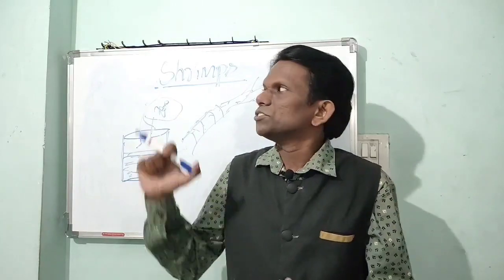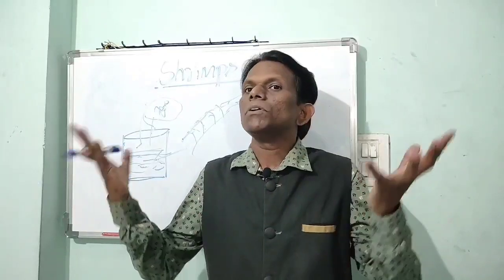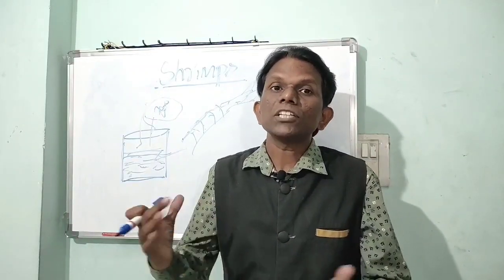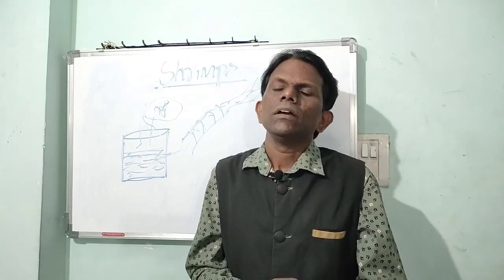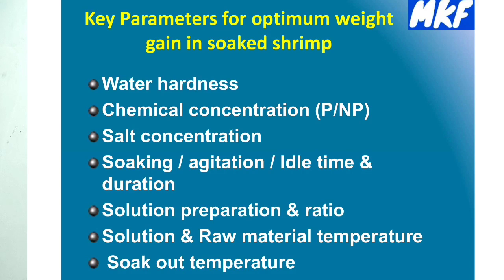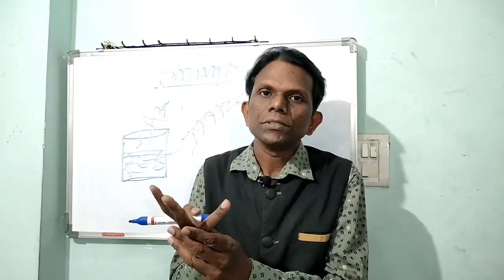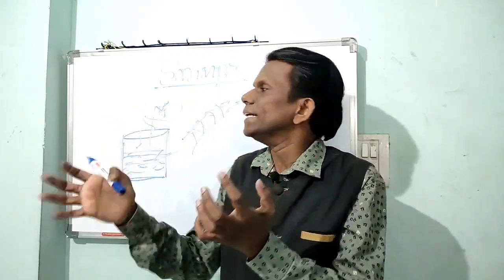After soak-out, the temperature might be plus six to plus seven degrees centigrade — this is advisable for better weight gain. We also have to check the count and weight. The key factors to get optimum yield in soaking are: water hardness, proper preparation of chemicals in sequence, agitator RPM, agitation and stirring time, solution ratios, and temperature.